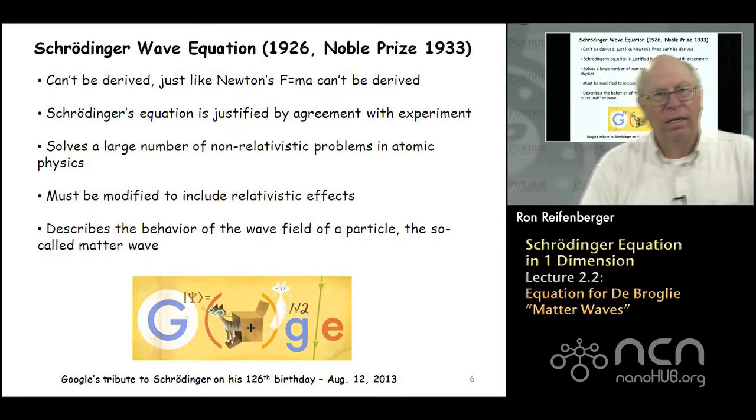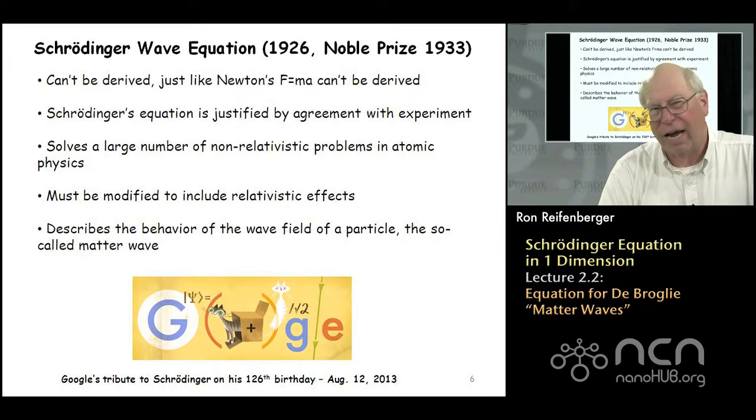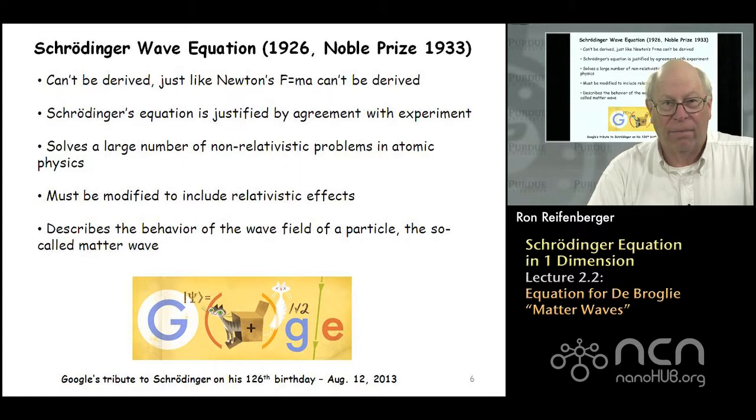So, again, Schrodinger's equation can't be derived. It's sort of like Newton's F = ma. You can't derive that equation. You can make it plausible. And once you write it down, you can use it to try to understand what it predicts. And then you can compare those predictions to experiment.